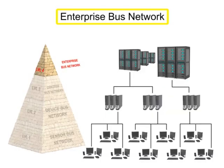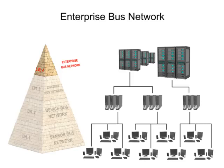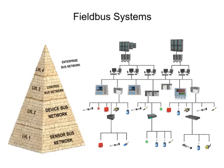The enterprise or information level network in a company connects all computers and departments together. It is the most overarching and complex of all the various network levels. This level of networking is primarily computer-driven, which allows for data collection, data monitoring, file transfers, and email exchange on a large scale. The various levels of interconnected fieldbus networking help to keep industry functioning smoothly and successfully.